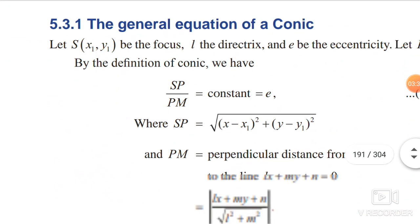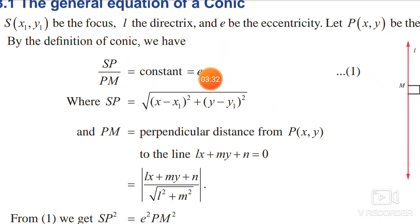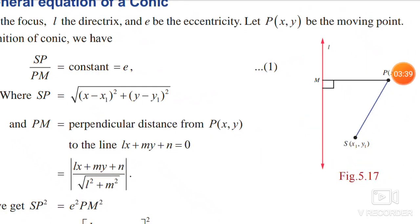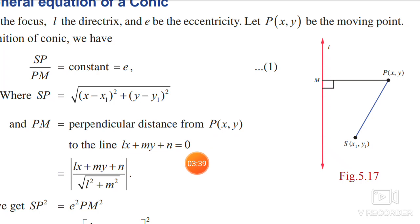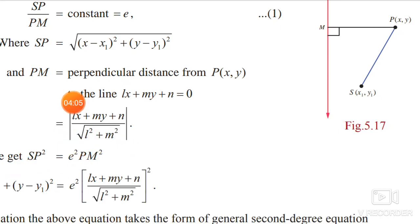Now for the general equation of a conic. From the definition, SP by PM equals e. Looking at the diagram, S is the fixed point and P is the moving point, so SP equals the square root of (x minus x₁)² plus (y minus y₁)². PM is the perpendicular distance from the point to the line, which equals the modulus of lx plus my plus n, divided by the square root of l² plus m².